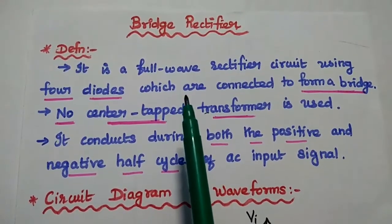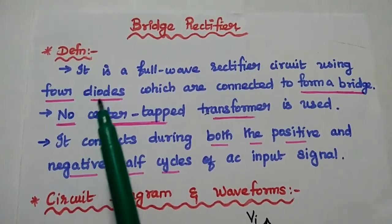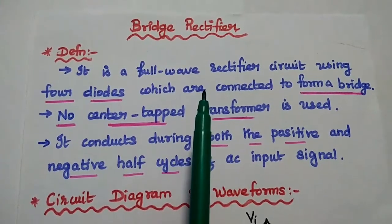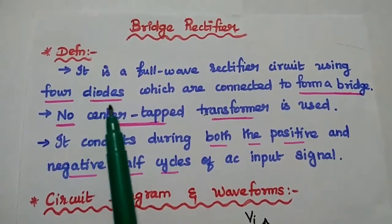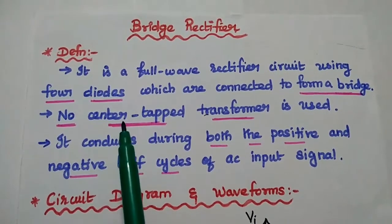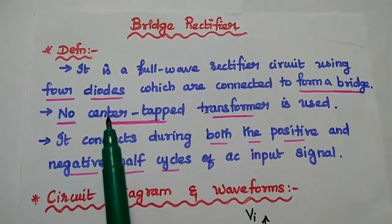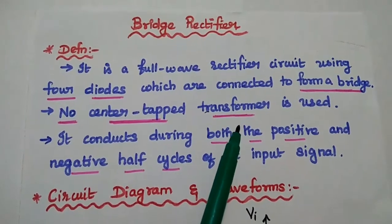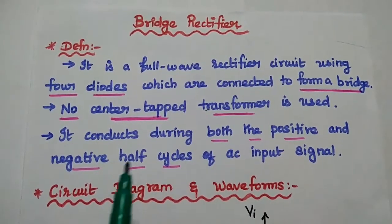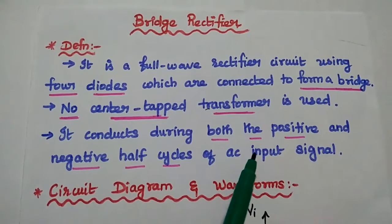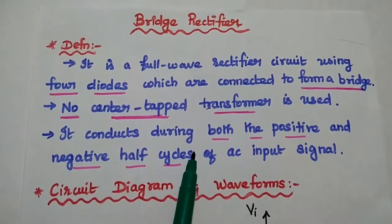Now we are going to discuss bridge rectifier in detail and derive its characteristics. A bridge rectifier is a full wave rectifier which uses 4 diodes to form a bridge circuit. These 4 diodes are mainly used to eliminate the use of a center-tapped transformer. That means in bridge rectifier, no center-tapped transformer is used. It is a full wave rectifier, meaning it can conduct during both the positive and negative half cycles of the AC input signal, giving us a full wave rectified output.